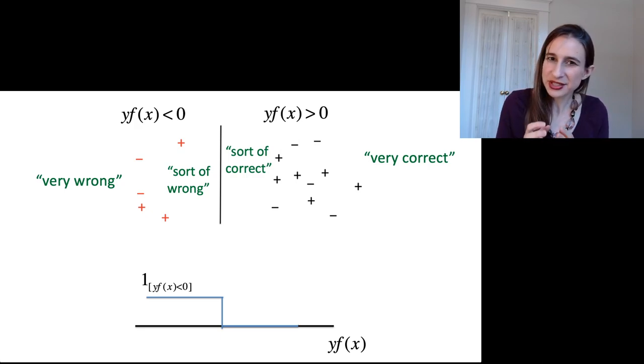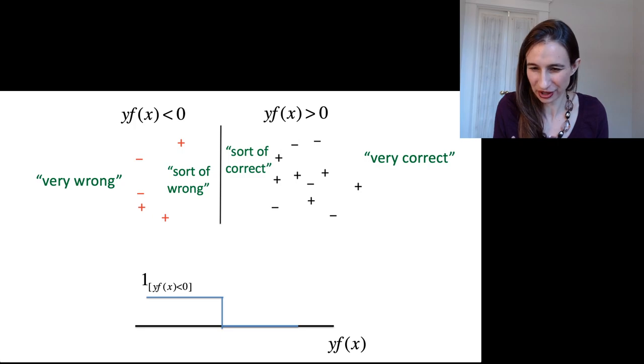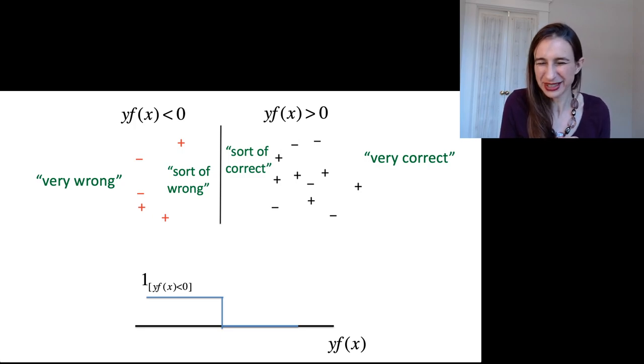And then if you're near the decision boundary, well, even if you're correct, the function f is saying that it's not really sure. So even if you got it right, well, it's just sort of right. And if you got it wrong, it's just sort of wrong.